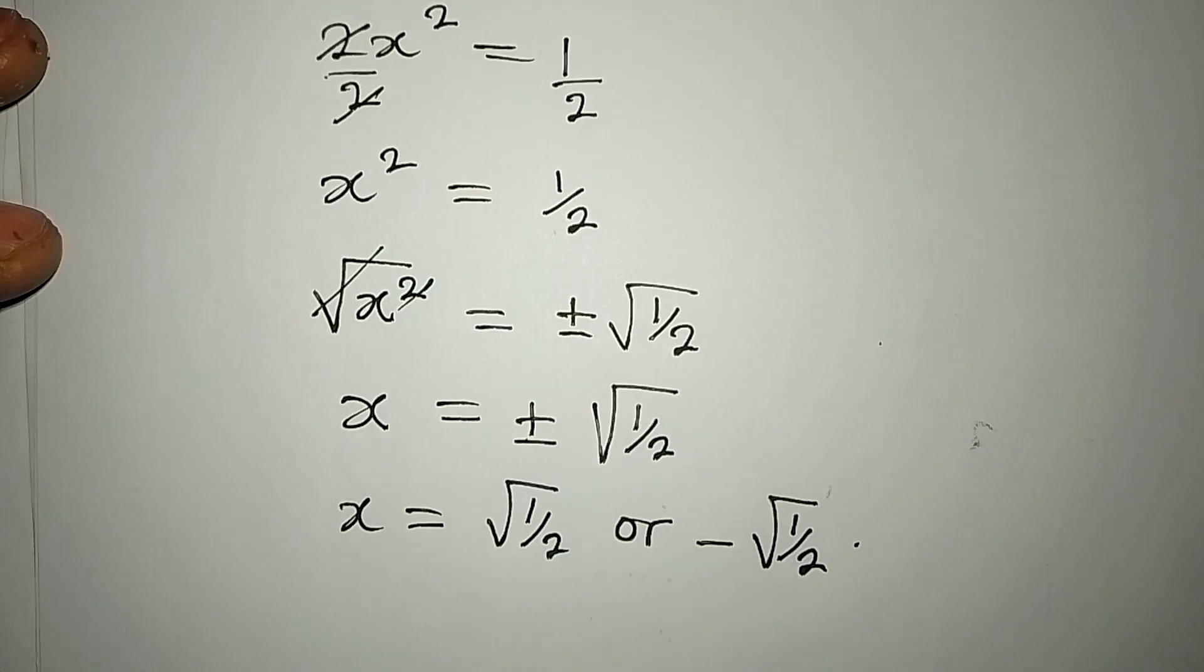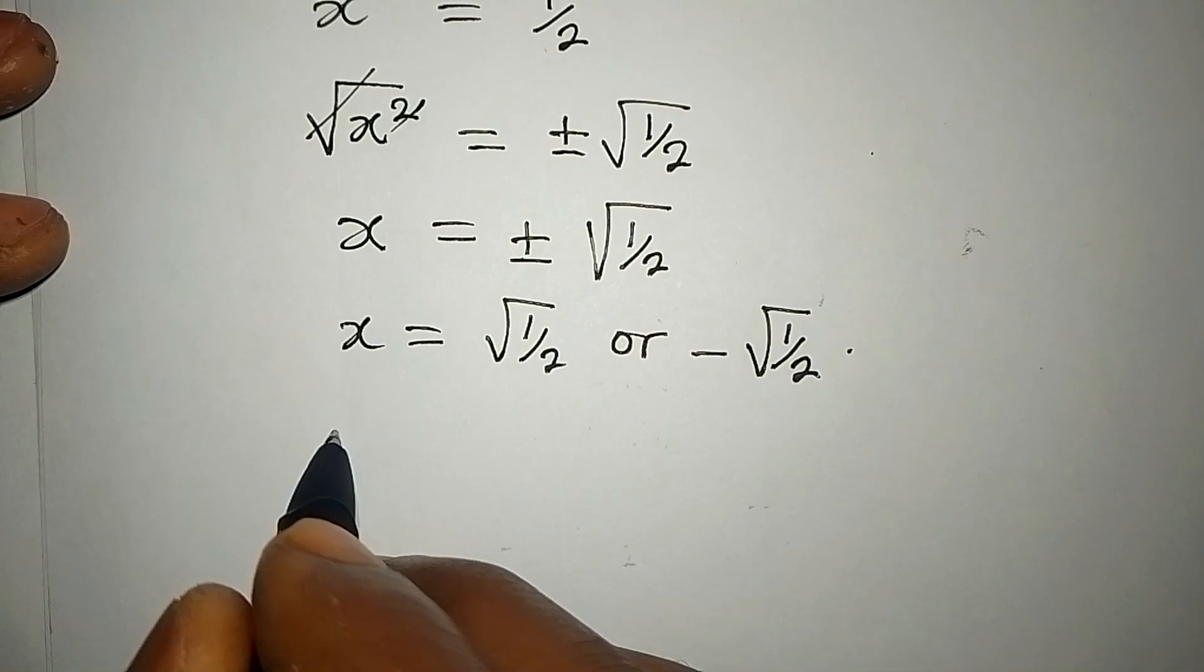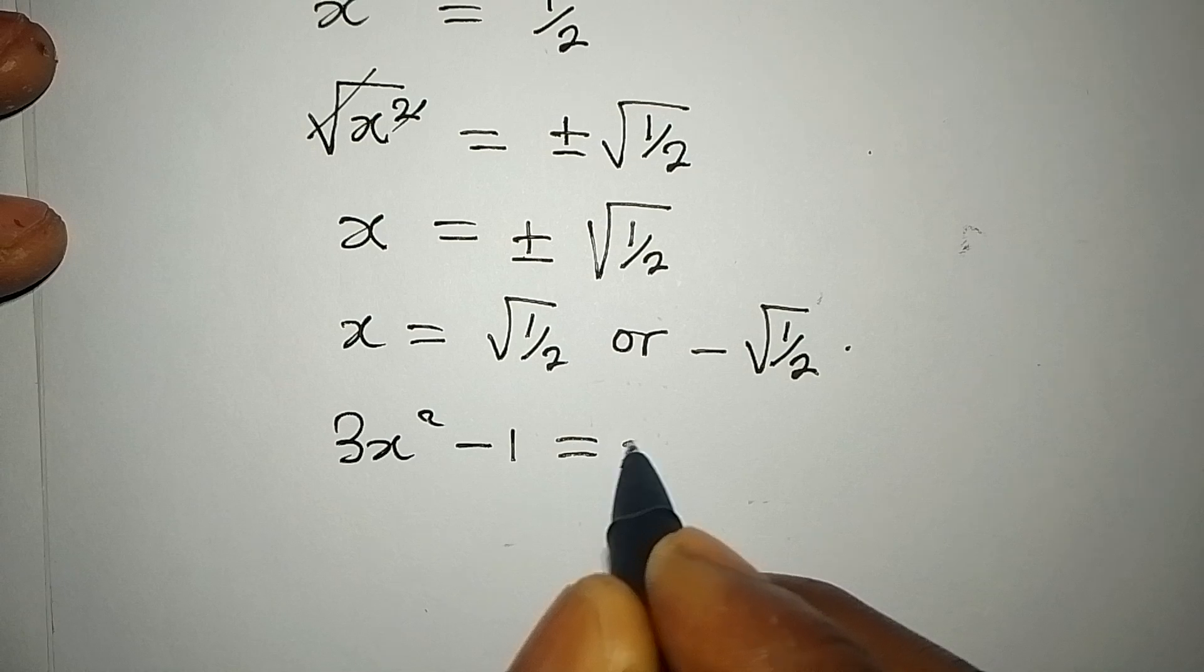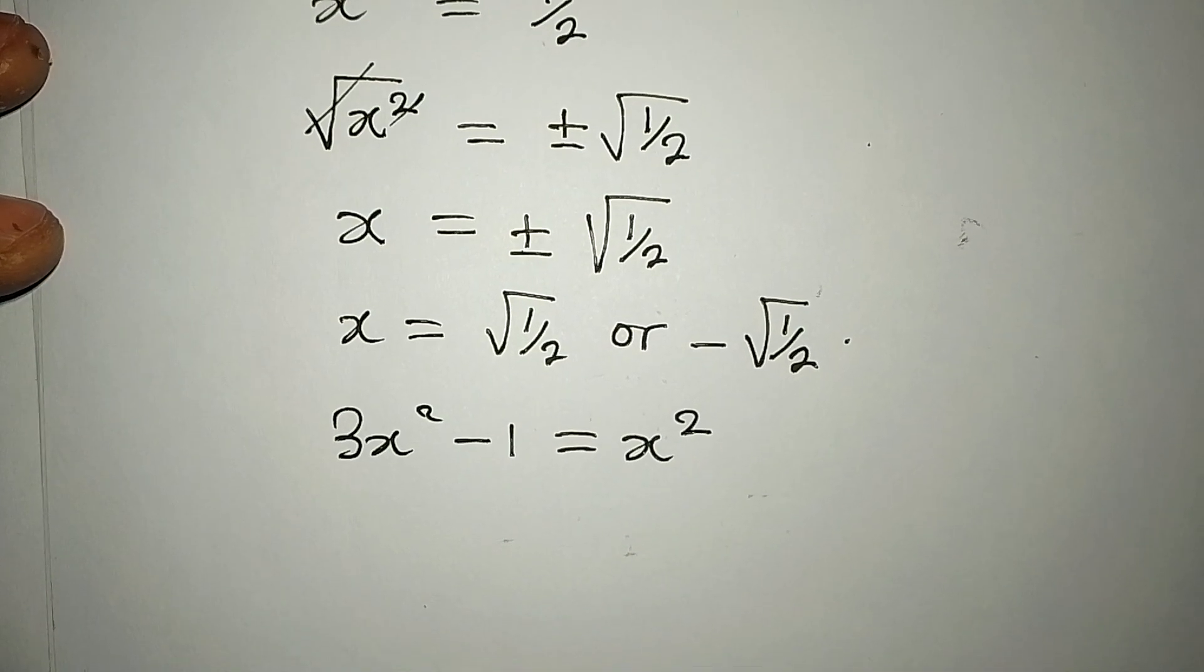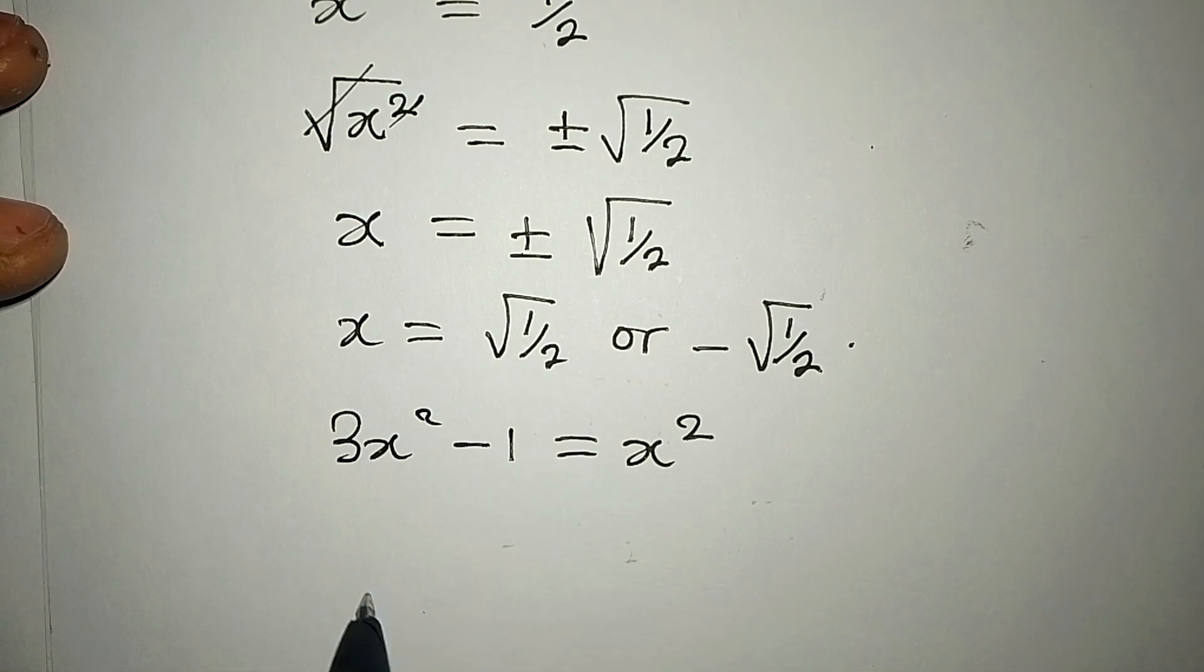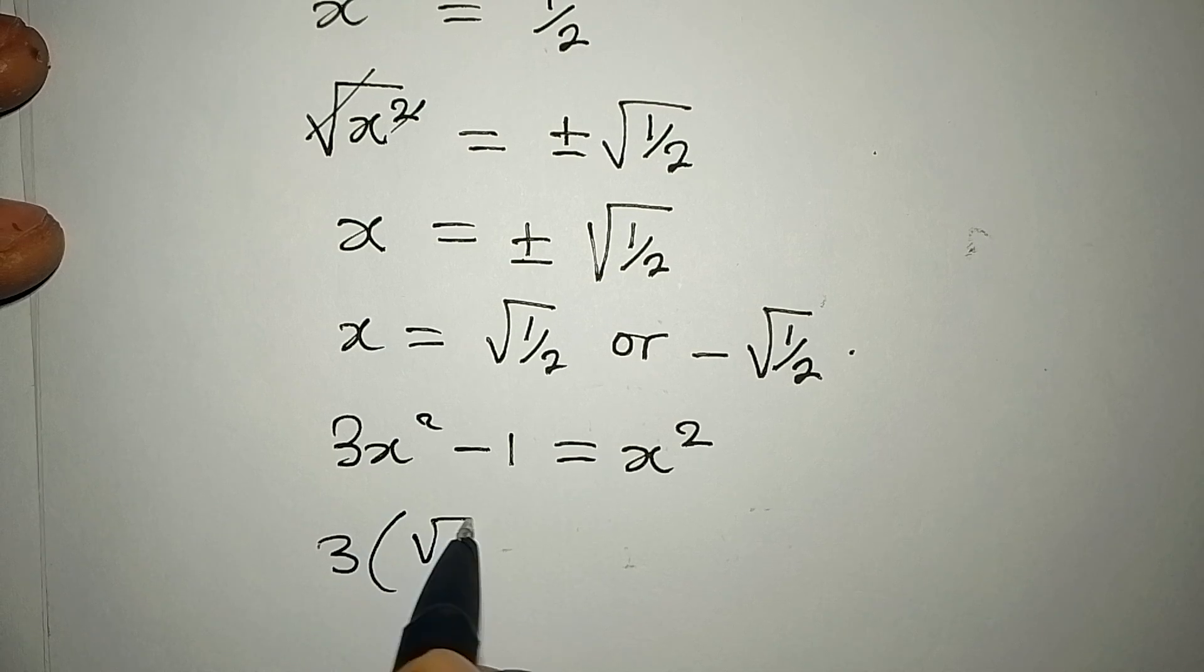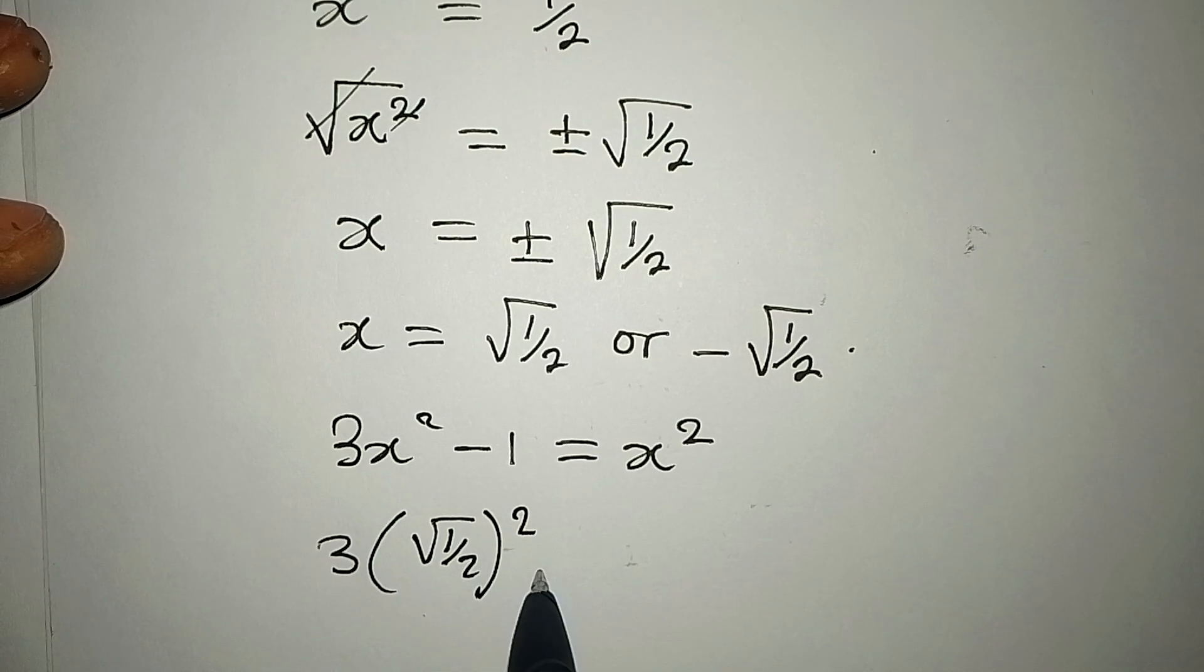Now if we put these two values into the original equation, which is 3x² - 1 = x², do you think we will be correct? Let's give it a try. Let's work with this value first. We're going to have 3(√(1/2))² - 1.